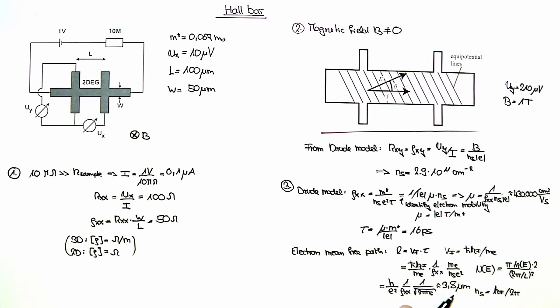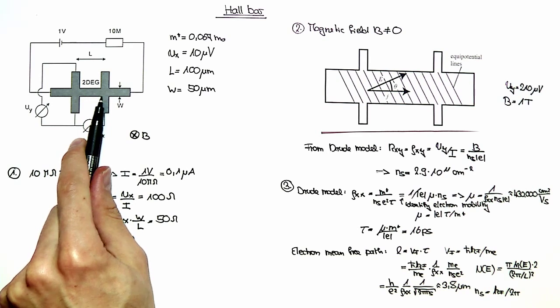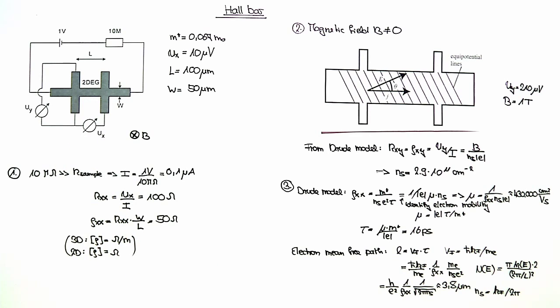As you can see, this mean free path is much less than the extent of the hole bar, meaning that we are in the diffusive transport regime.